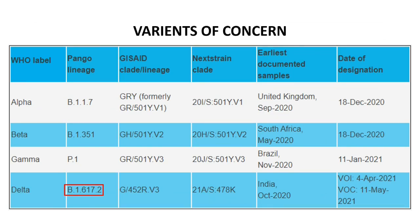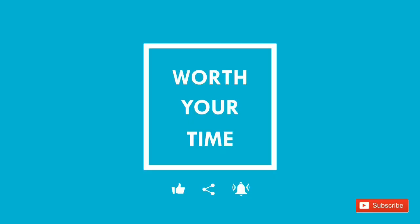So this is all about strain B1617 of SARS-CoV-2. To those who want to know more about science and technology happening around us, please stay tuned and press the bell icon to get notifications when we upload new videos. Thank you.